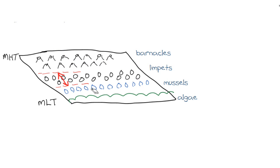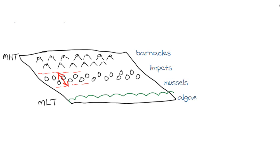A long time ago, scientists discovered that if they removed a species — such as picking off all of the mussels — then the range of the species around them expanded. In this case, the limpets were found further down, so the range of the limpets expanded into the vacant area.